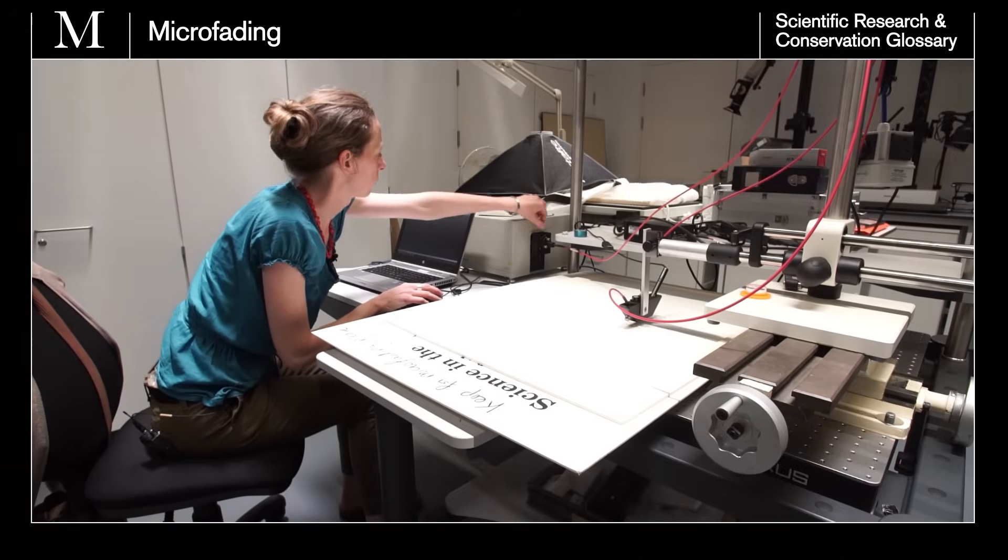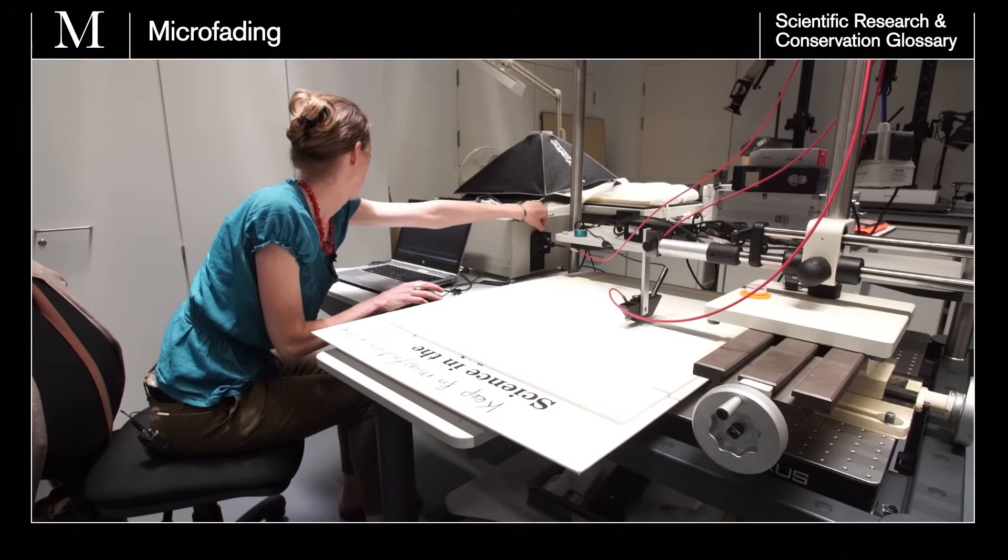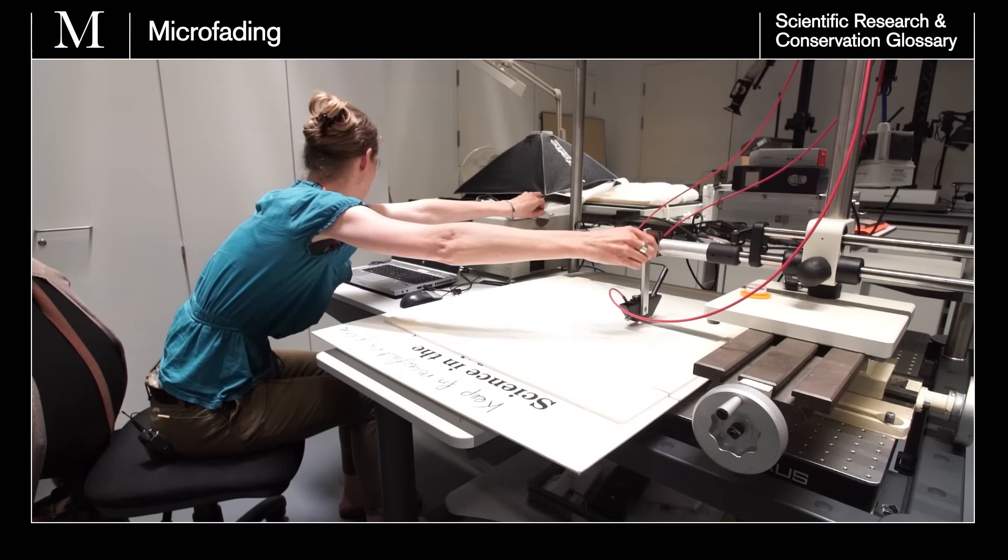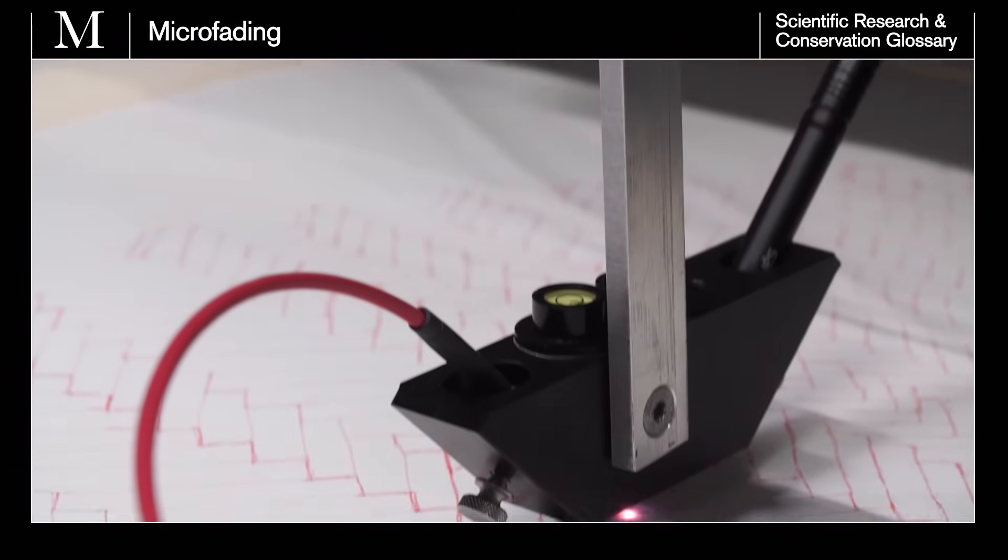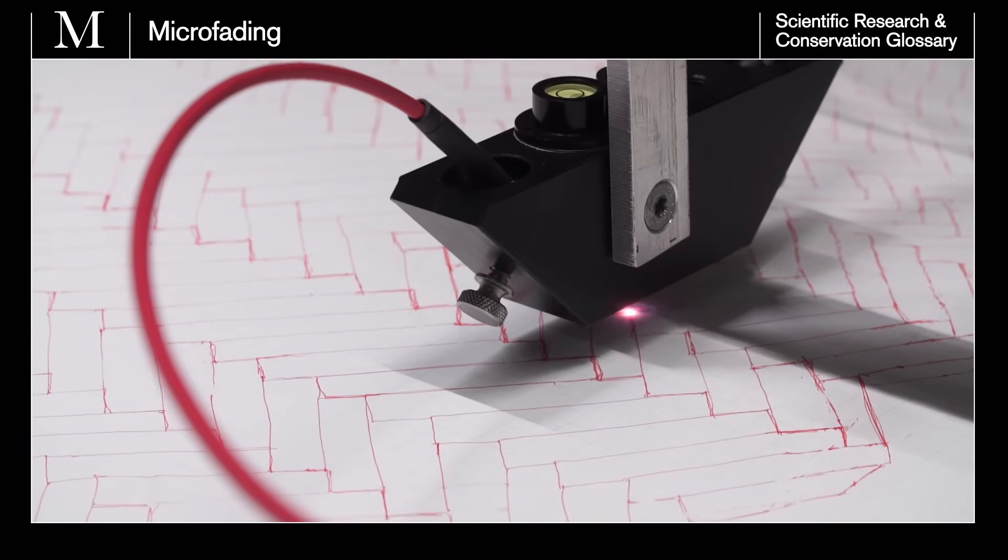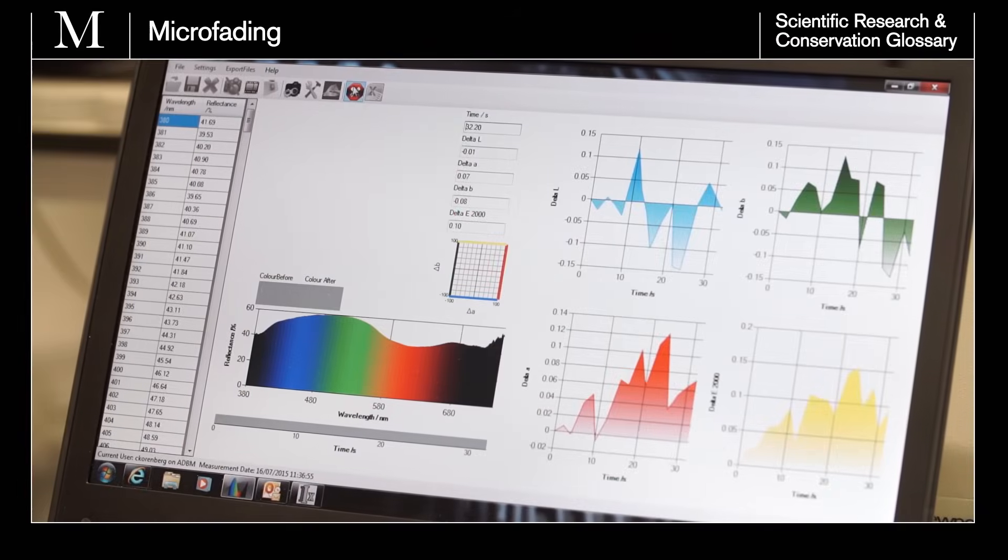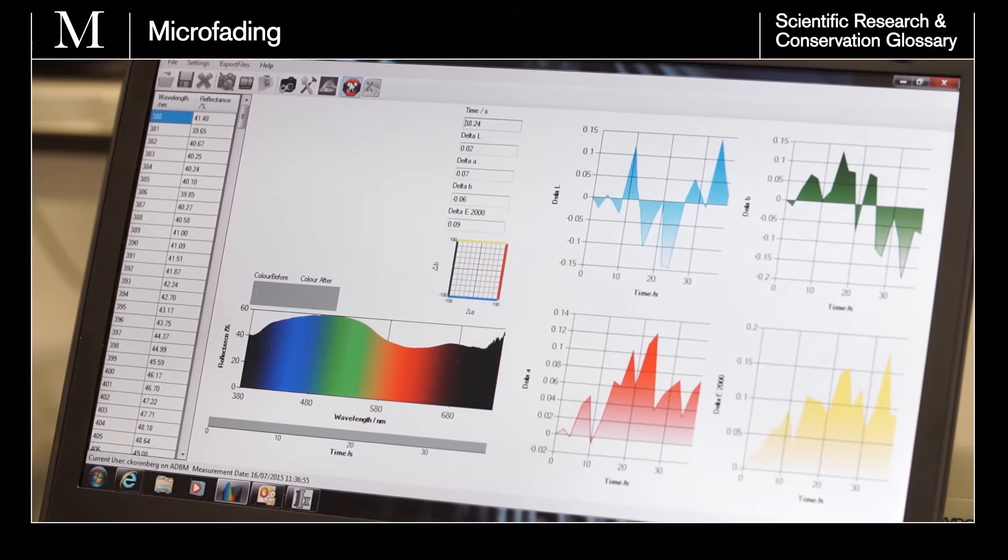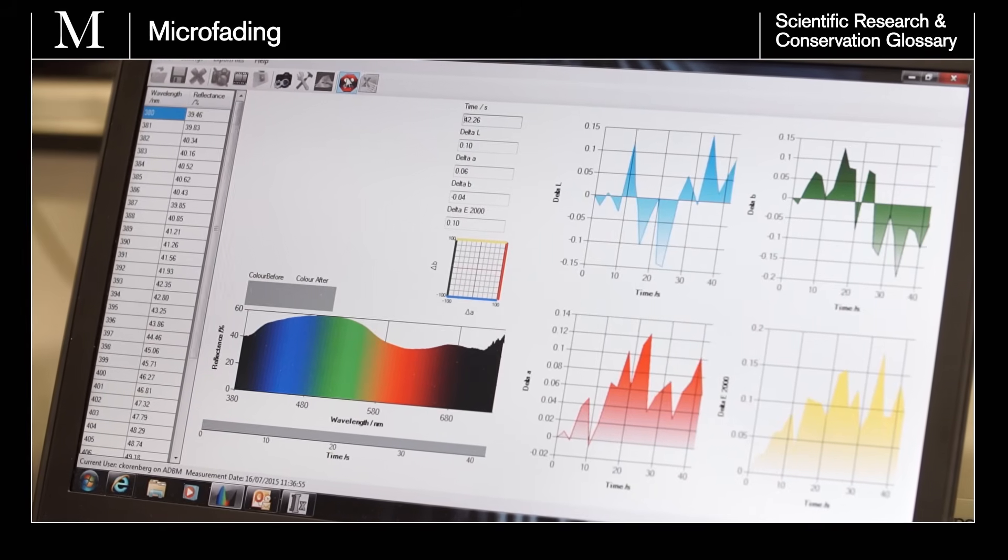To test suitability of lighting, micro-fading can be used. It accelerates ageing by directing high-intensity light onto a microscopic sample of an artefact. With results showing the rate of light damage, staff can adjust the display lighting conditions accordingly.